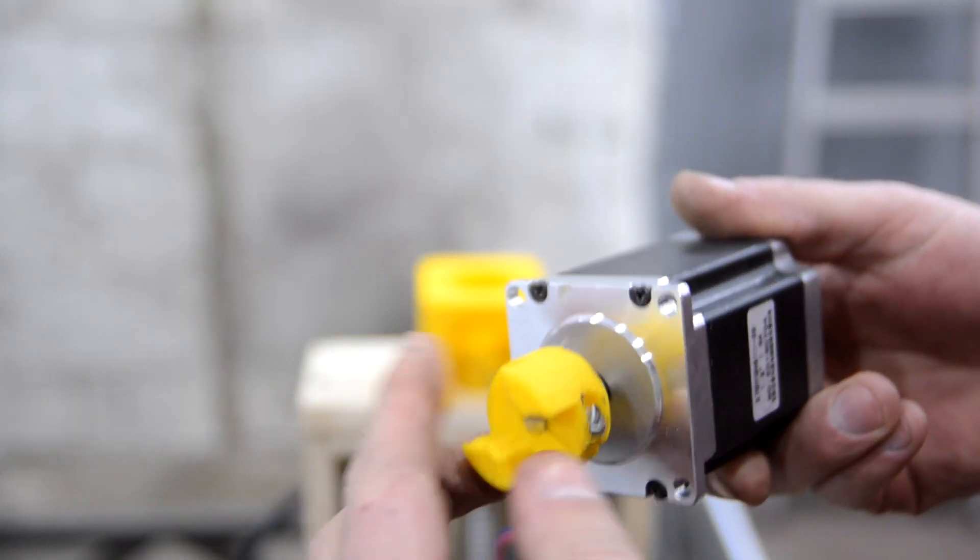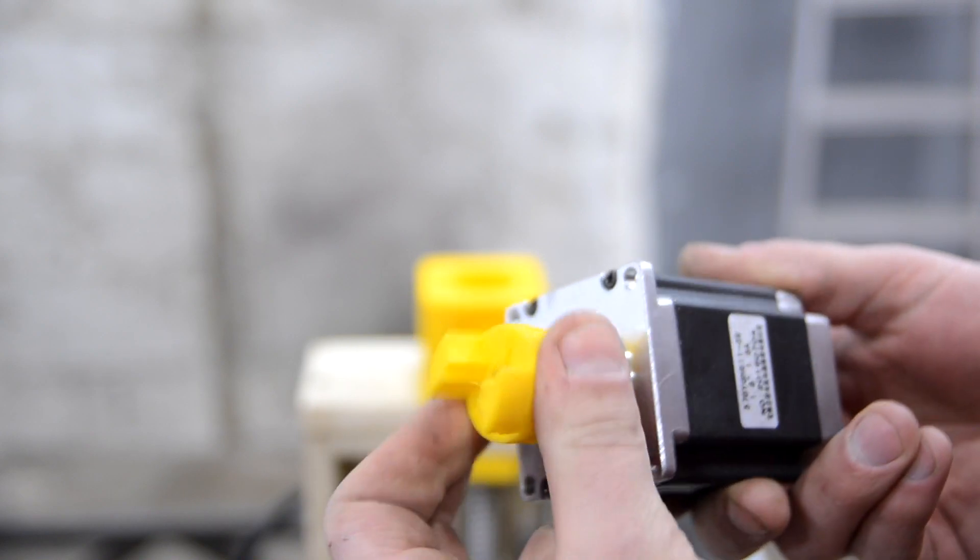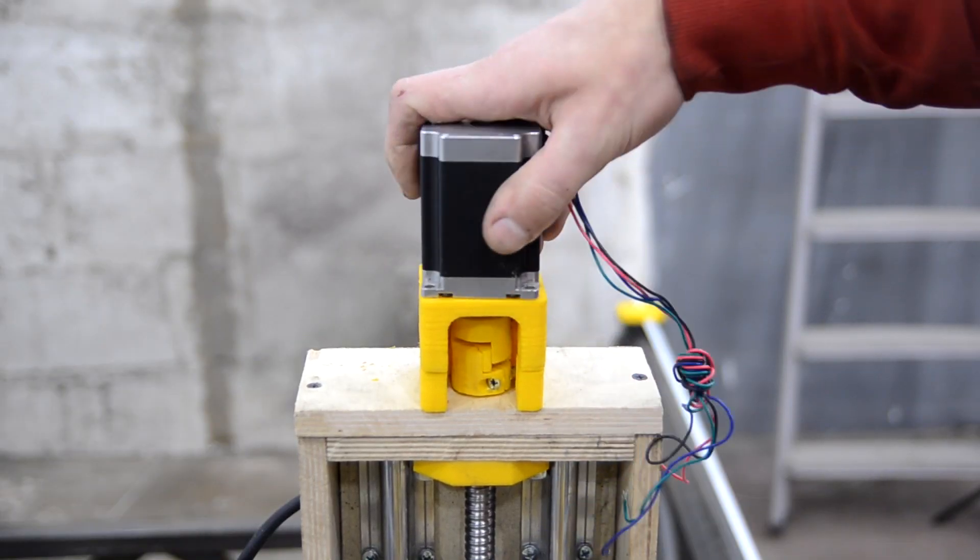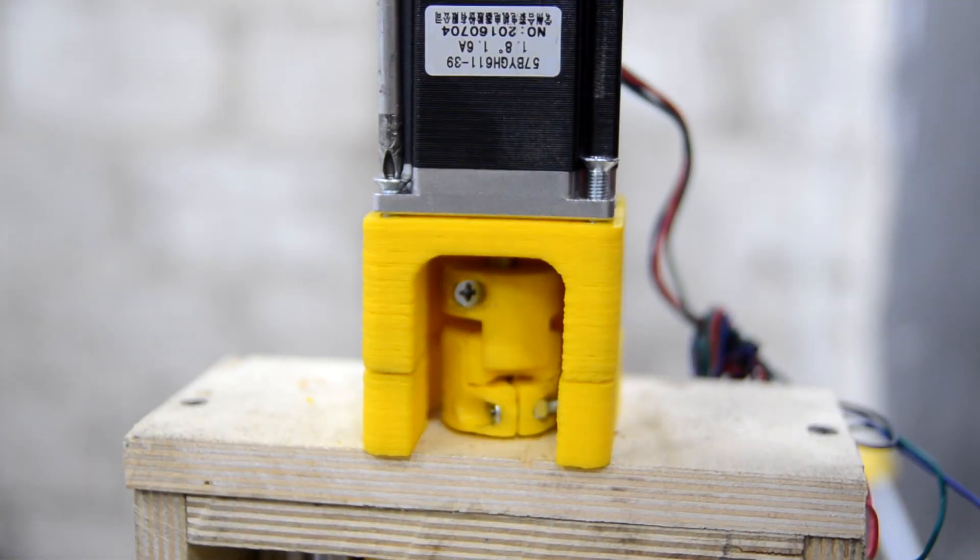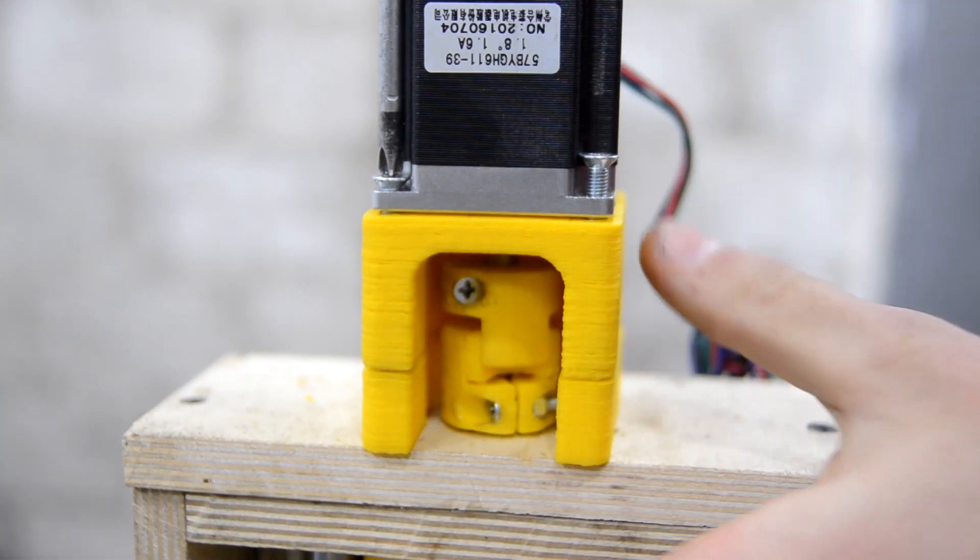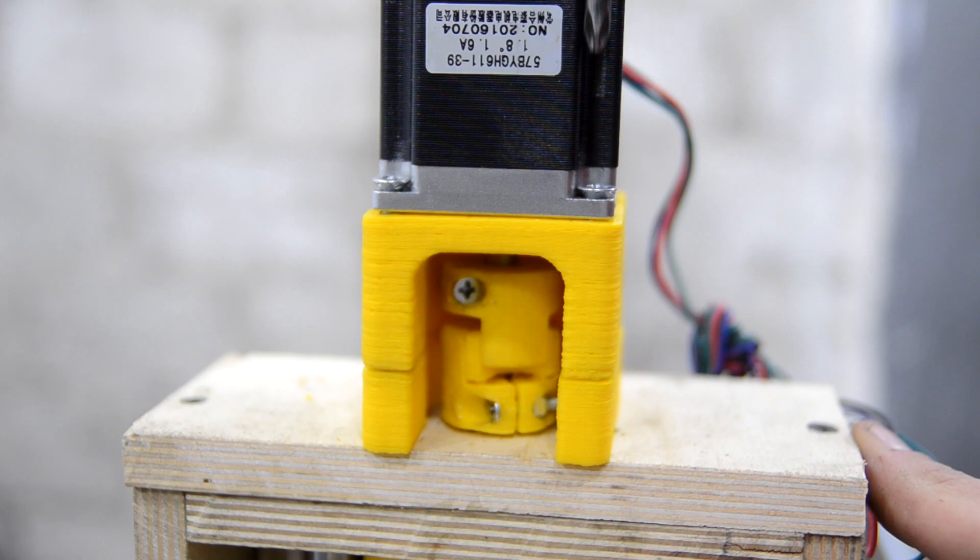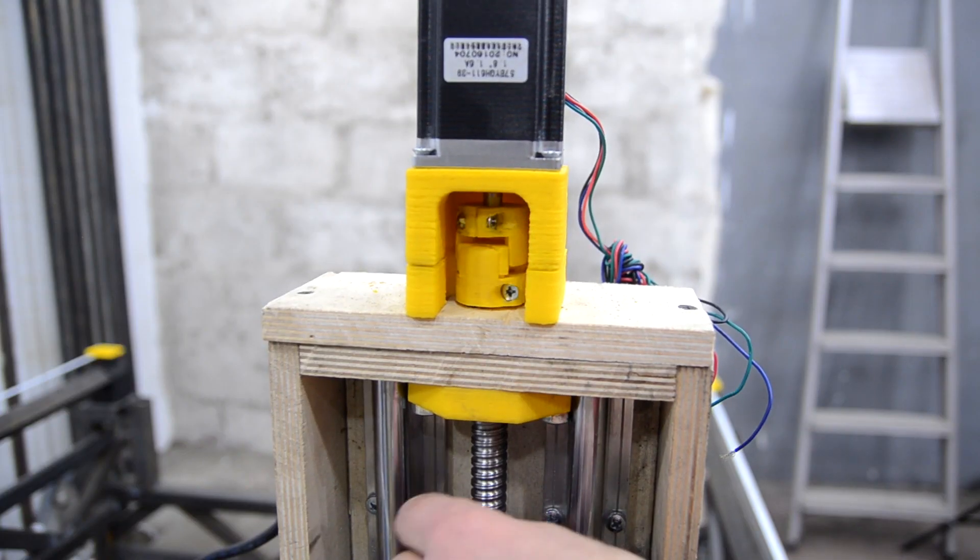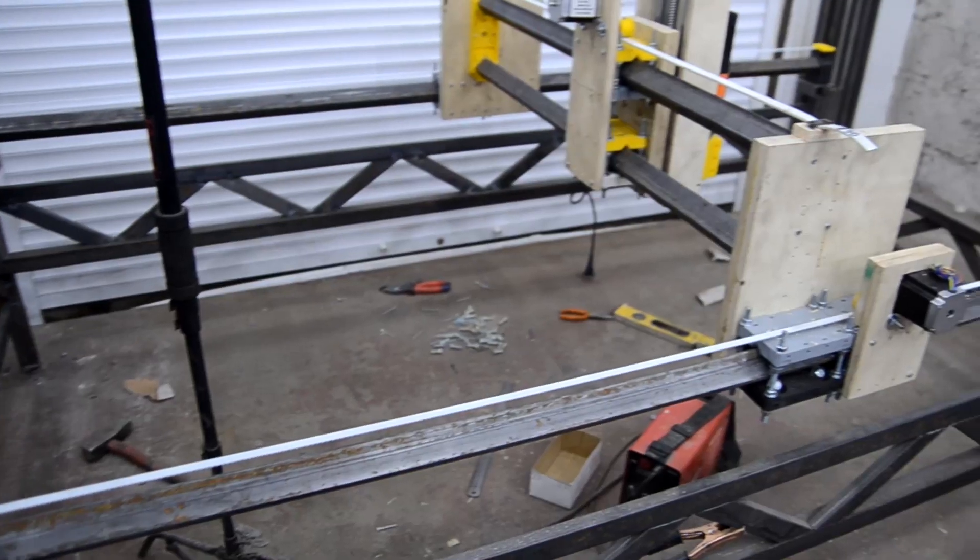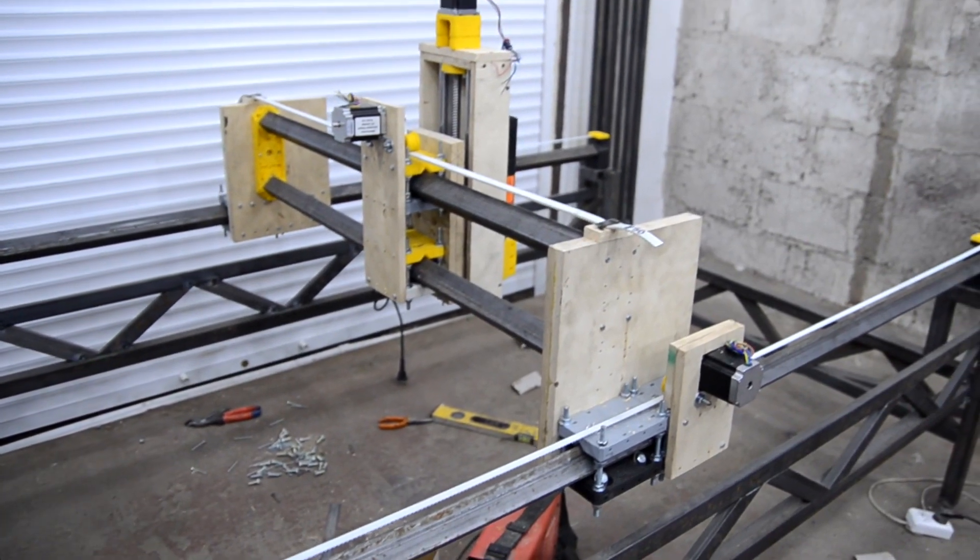To connect the stepping motor and the ball screw gear, I used a printed clutch as I haven't found a suitable one on sale. It withstood a lot of hours from work, I just had to pull it up sometimes. The engines are installed, now we need to think about the control.